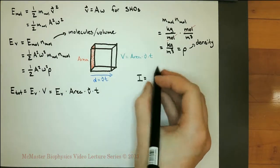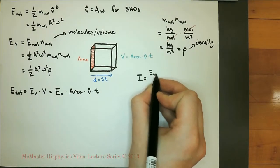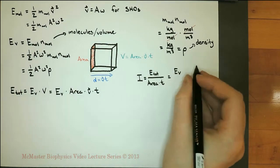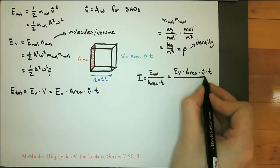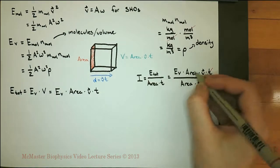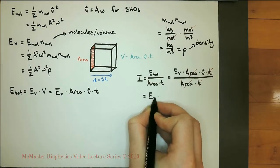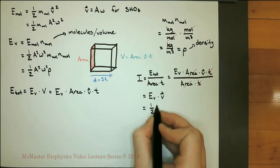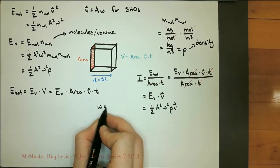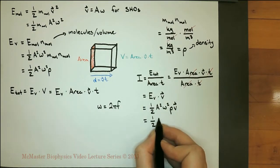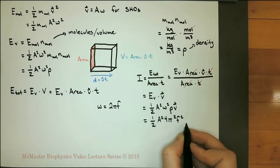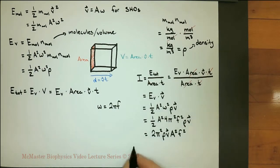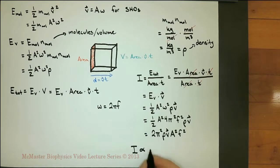The intensity of a sound is equal to the total energy divided by the area times time. When we expand and simplify, we are left with the intensity being equal to the energy per unit volume times the wave velocity. We then substitute that omega is equal to 2 pi f for simple harmonic oscillators, and find that the intensity is proportional to the amplitude squared times the frequency squared.